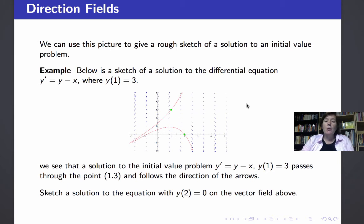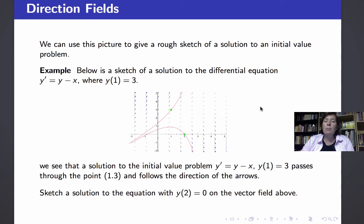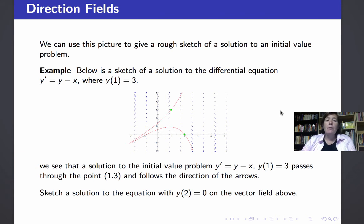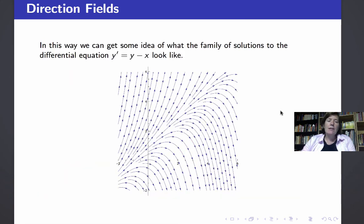Let's see what happens when I draw a rough sketch of the solution to this differential equation which passes through the point x equals 2 and y equals 0 — in other words, a solution to the initial value problem y prime equals y minus x and y of 2 equals 0. Starting at the point x equals 2, y equals 0, and following the arrows, I get this lower red curve, which looks very different than the previous solution to the initial value problem y of 1 equals 3. In this way, we can get some idea of what the family of solutions looks like by following the flow of the arrows.